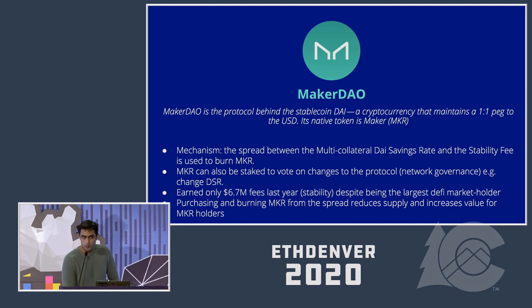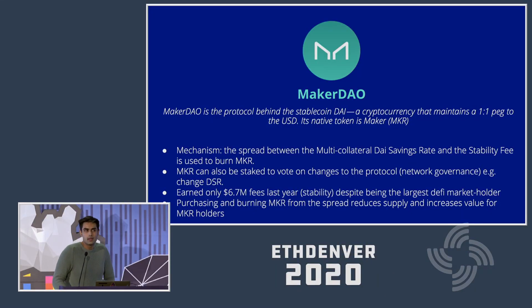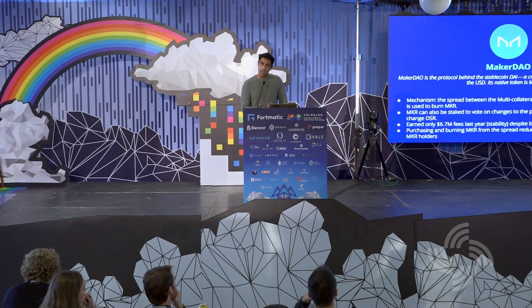I wanted to focus on a few tokens that have taken my interest over the last year, primarily because they've done some pretty cool things with their token models. The first is MakerDAO — the protocol behind the stablecoin DAI, which maintains a one-to-one peg with the US dollar, and its native token is MKR. The fundamental mechanism is that the spread between the DAI savings rate and the stability fee is burned in Maker. Maker can also be used to vote on governance changes, such as changing the percentage of the DAI savings rate. Despite MakerDAO holding the largest market grasp of the DeFi ecosystem, they only generated $6.7 million worth of fees due to their stability fee burning. The incentive is: if you purchase and burn Maker, it reduces the supply and increases the value of your holding. This burning mechanism is quite interesting and I think it's going to become quite popular.